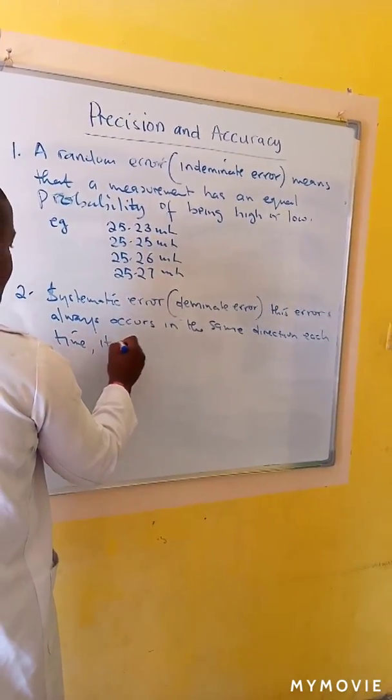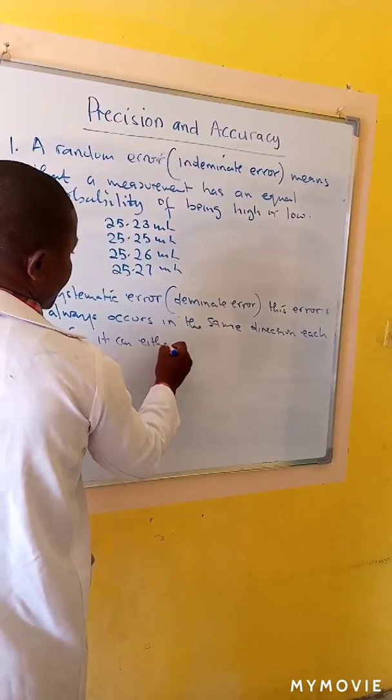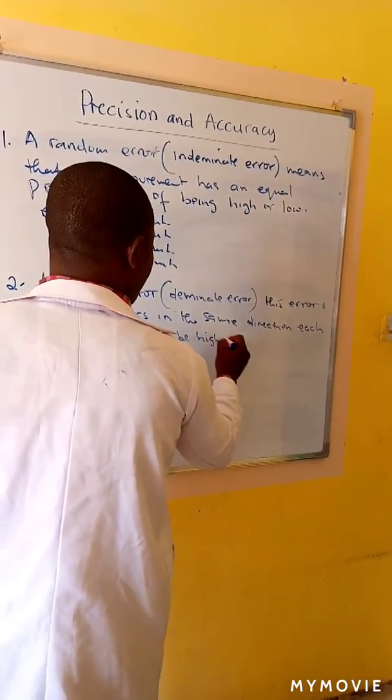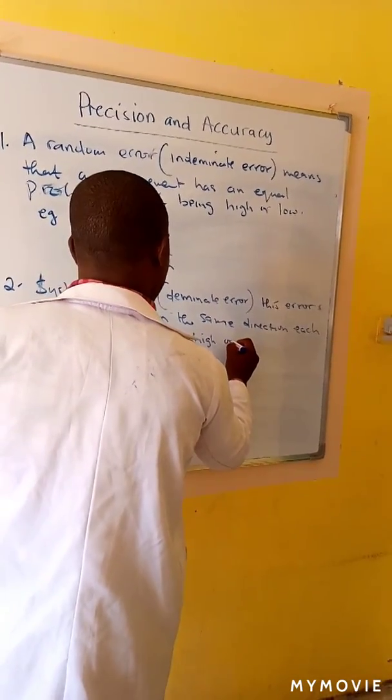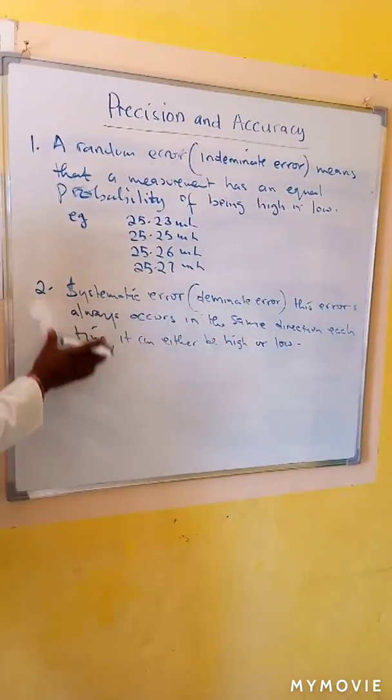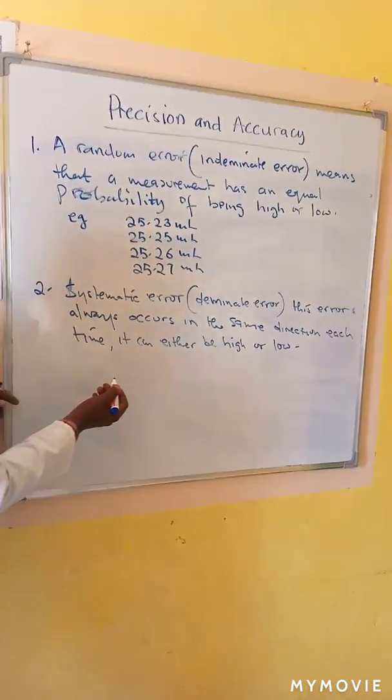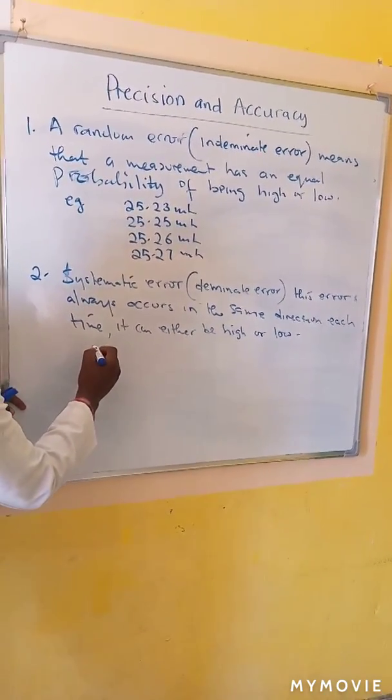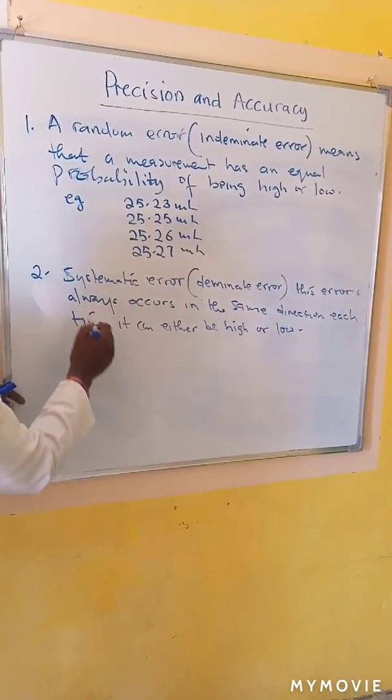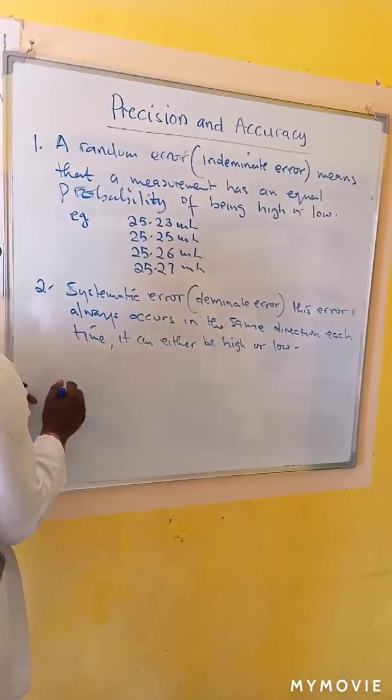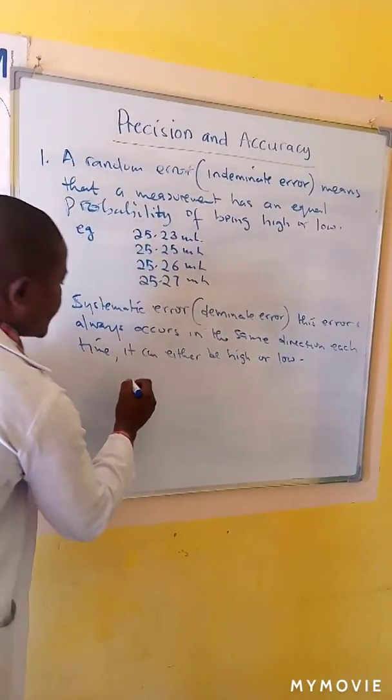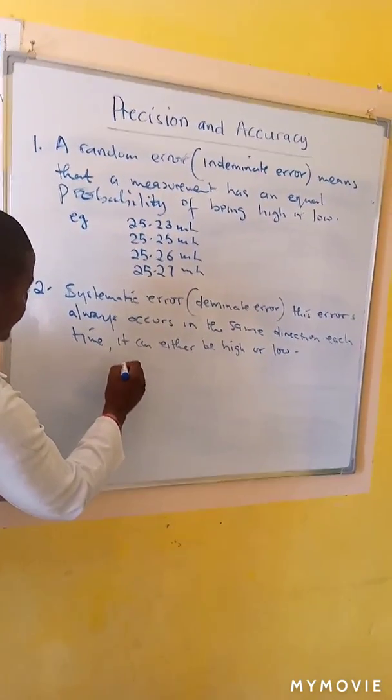It can either be high or low. So suppose you are measuring or weighing some samples using a defected balance. Suppose you weigh sodium hydroxide pellets using a defected balance.